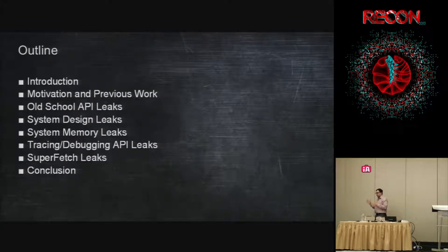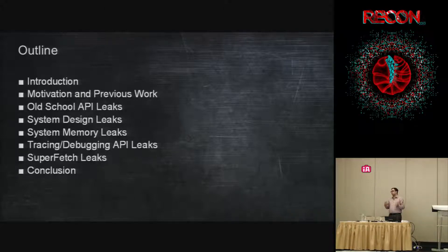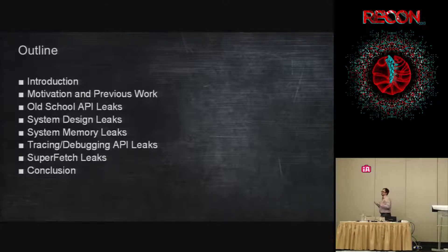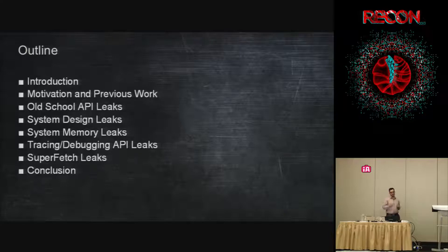The other part I'm going to talk about is new APIs, other functions, other ways. Memory leaks basically going to prove how kind of futile it is to think that kernel ASLR on Windows can really do anything against a local attacker, because there are just so many ways to get things out. We'll also talk about why there are so many and what someone could do about that.